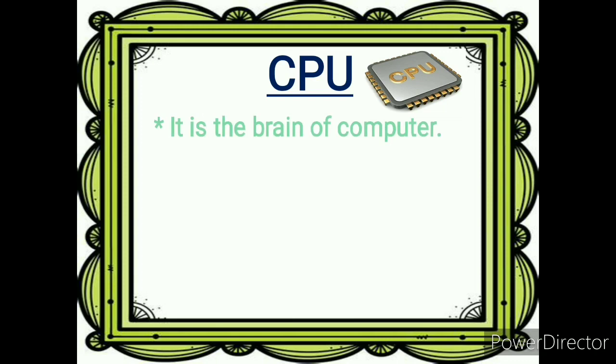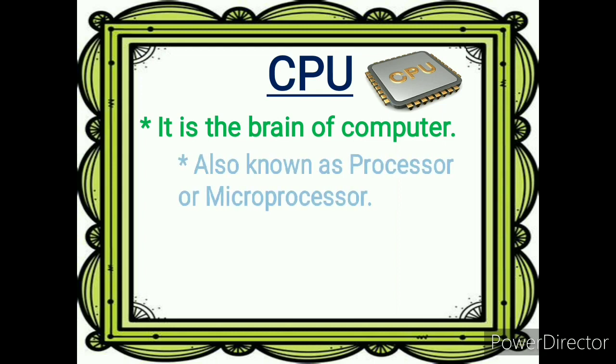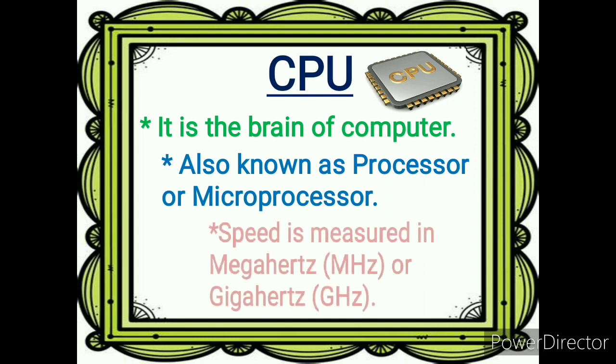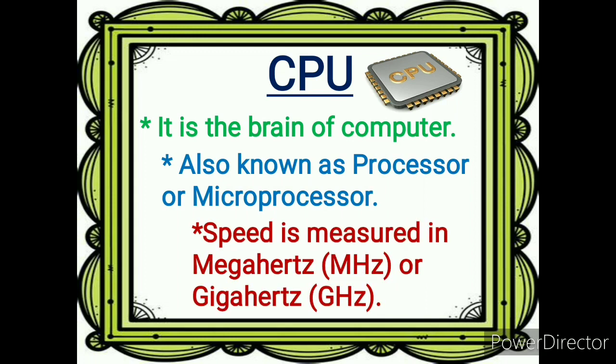The second component is the CPU. We all know that the CPU is the brain of the computer which controls every part of the computer. It is also known as a processor or microprocessor. We can measure the speed of CPU in MHz or GHz.